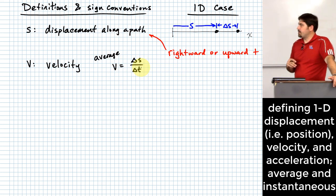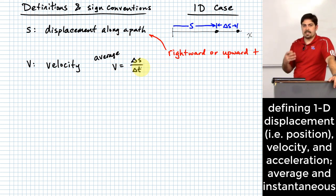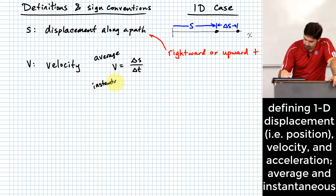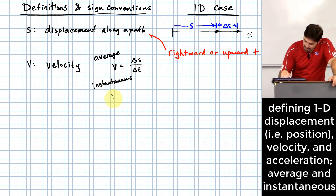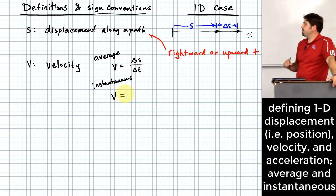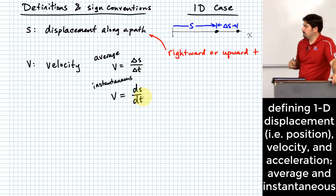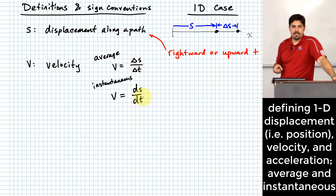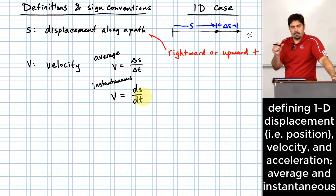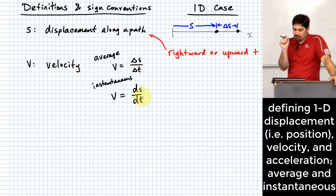A lot of times we don't want to stay in the domain of average velocity. We want to talk about instantaneous velocity. For instantaneous velocity, instead of delta s over delta t, we move this to being ds/dt. The difference between using delta and a lowercase d: those are called differentials — an infinitesimally small change in s.